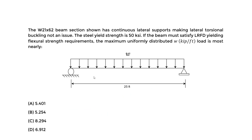Let's do an example for the design of steel components by specifically looking at beams and using the yielding criteria. We will focus strictly on the flexural strength — the design flexural strength. We have a W21×62 beam shown with continuous lateral supports, making lateral torsional buckling not an issue. So we do not have to worry about that for the purposes of this question.